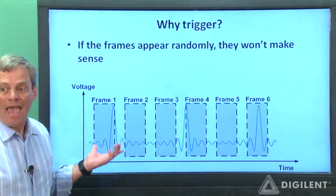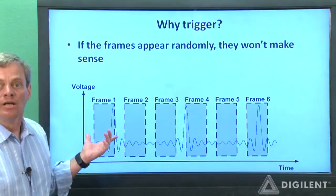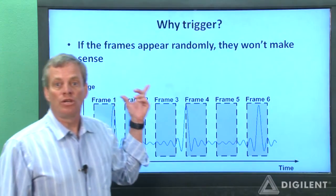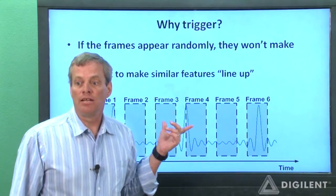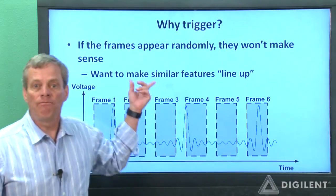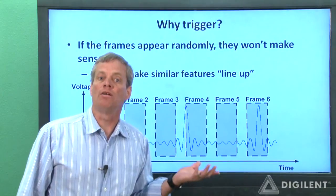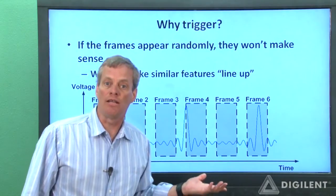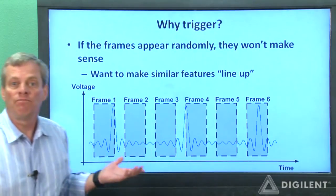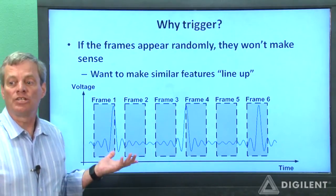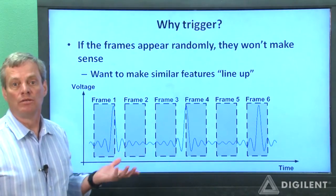What we can do is choose our snapshots of data so that some feature on the data lines up at the same point in all the snapshots. This feature is called a trigger point.